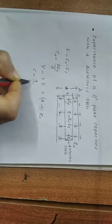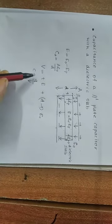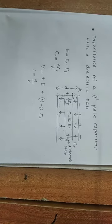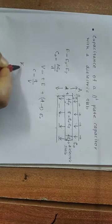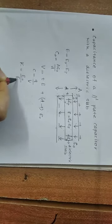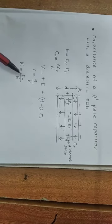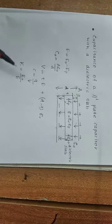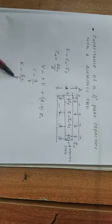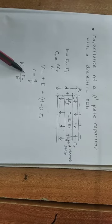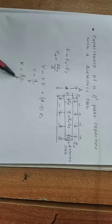Capacitance C is equal to Q by V. The dielectric constant K is defined as the ratio E0 by E, where E0 is the external electric field and E is the reduced electric field inside the dielectric slab. So K equals E0 divided by E, which means E equals E0 divided by K.